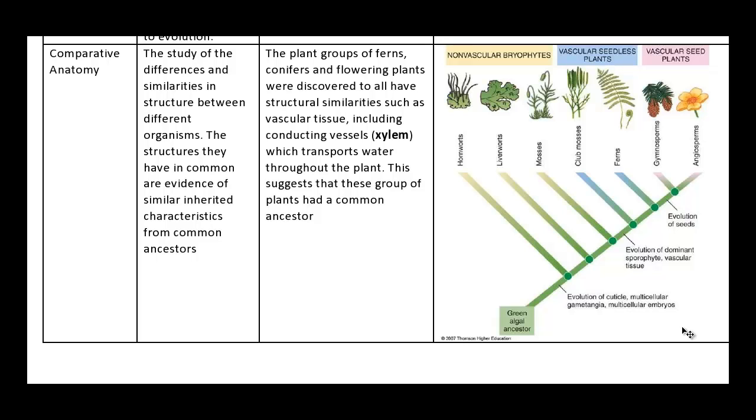The plant groups of ferns, this is my example, the plant groups of ferns, conifers and flowering plants were discovered to all have this structural similarity such as vascular tissue. You might have learned about xylems early on, the thing that carries water up the plant from the roots to the rest of the plant. These xylems, these conducting vessels which transport water throughout the plant, these suggested that since all these groups of plants have this xylem, that they must have come from a common ancestor. And that's just another way of proving that everything does come from a common ancestor, and hence allows us to prove that evolution is true.